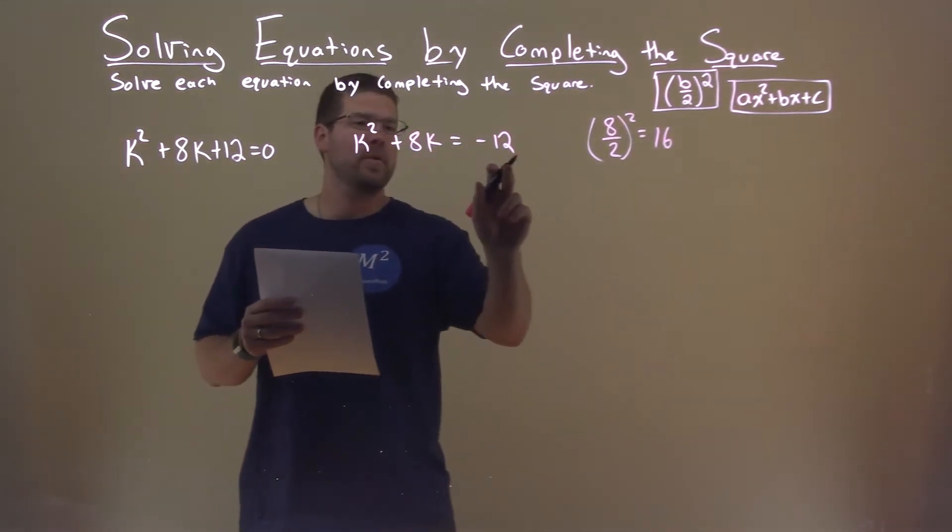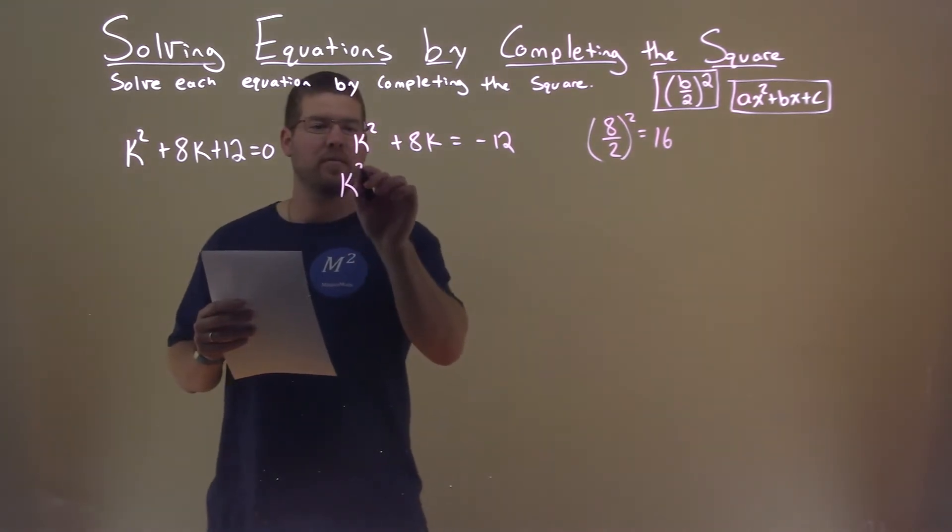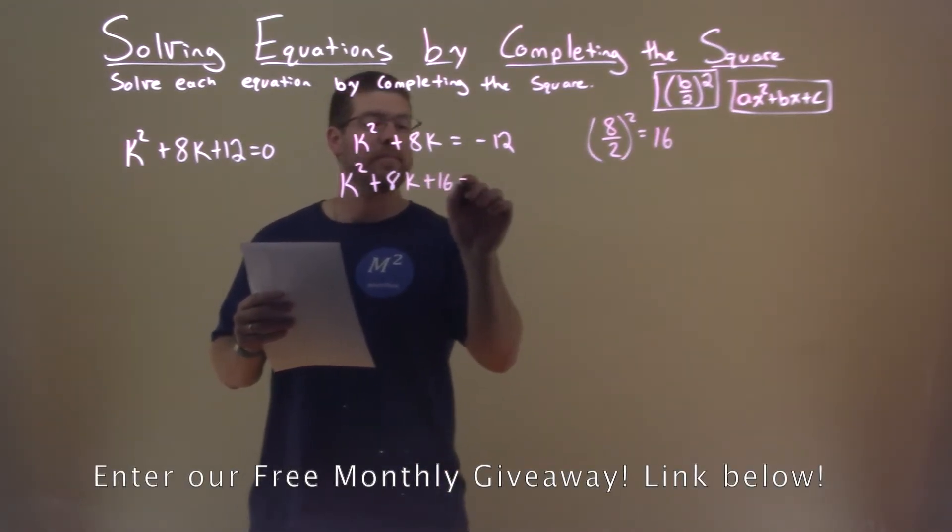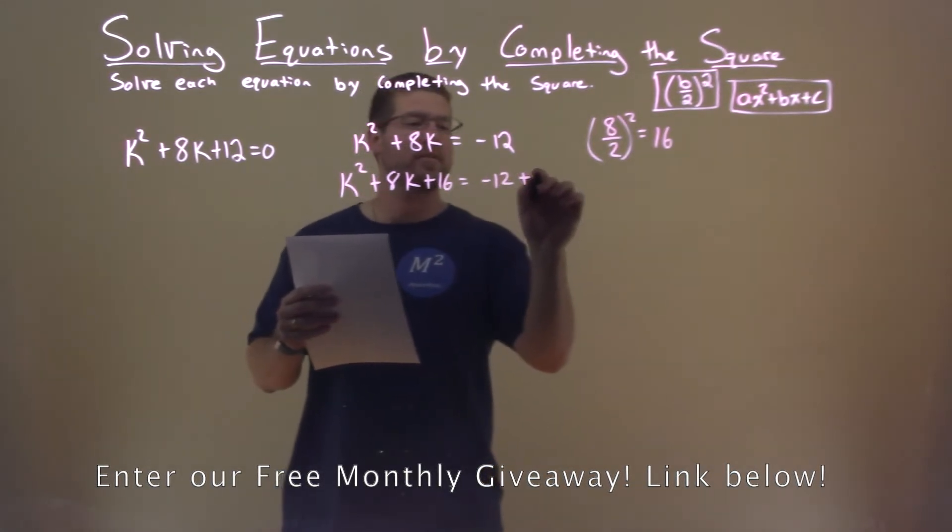So we're going to add 16 to both sides of the equal sign. K squared plus 8k plus 16 equals negative 12 plus 16.